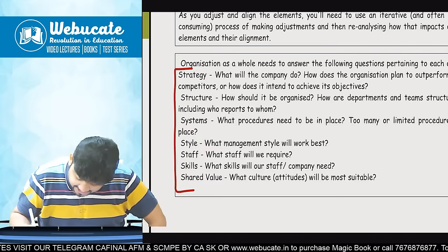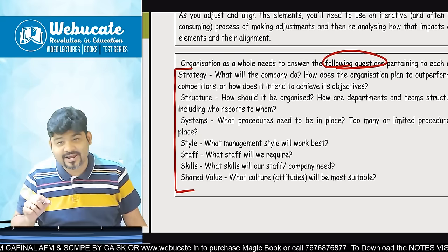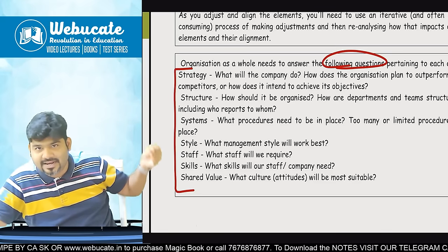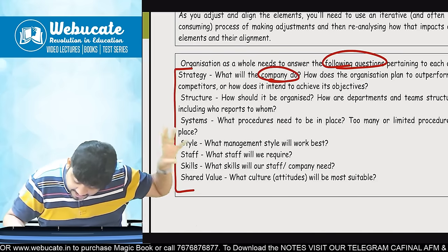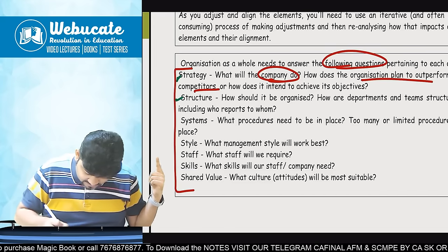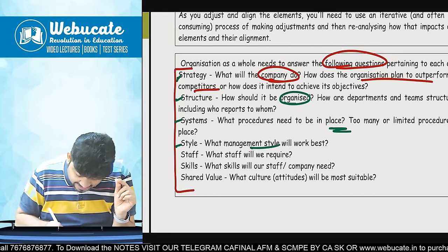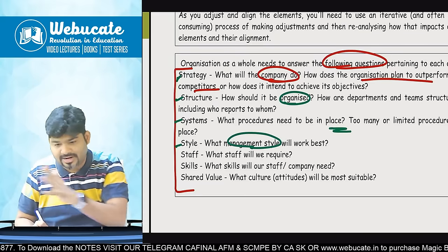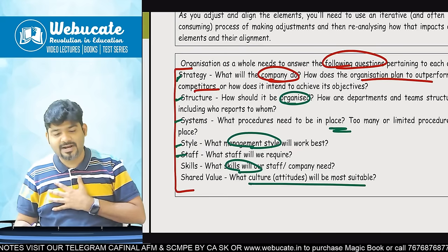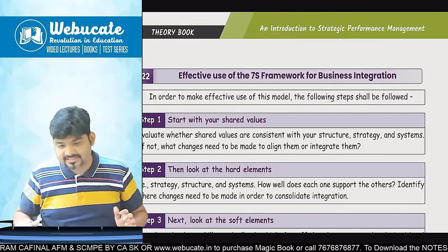The organization as a whole needs to answer the following questions for each S. Strategy: what will the company do, how does the organization plan to outperform competitors? Structure: how should it be organized? Systems: what procedures need to be in place? Style: what is the management style — participative, autocratic, etc.? Staff: what kind of staff is needed and what skills to give them? Shared values: what will be the culture of the organization? All of that is what defines your 7S McKinsey model.